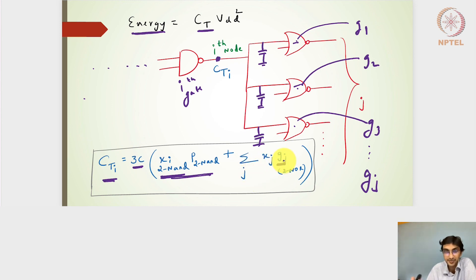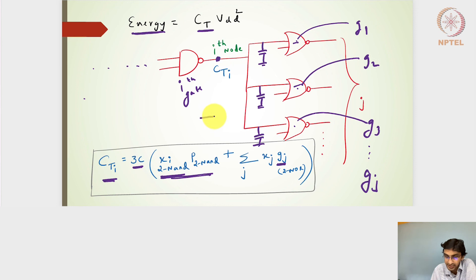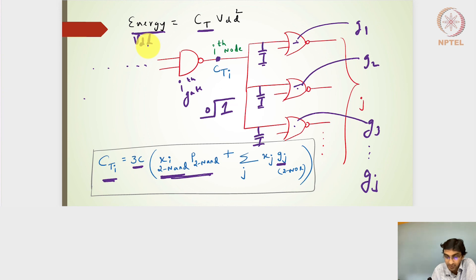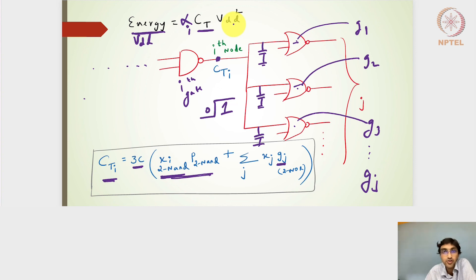This total capacitance represents the absolute energy for the 0-to-1 transition at the i-th node. To estimate the average energy delivered by VDD at the i-th node, we compute α_i × C_T × V_DD², where α_i is the activity factor, giving the energy delivered by VDD for one clock cycle.